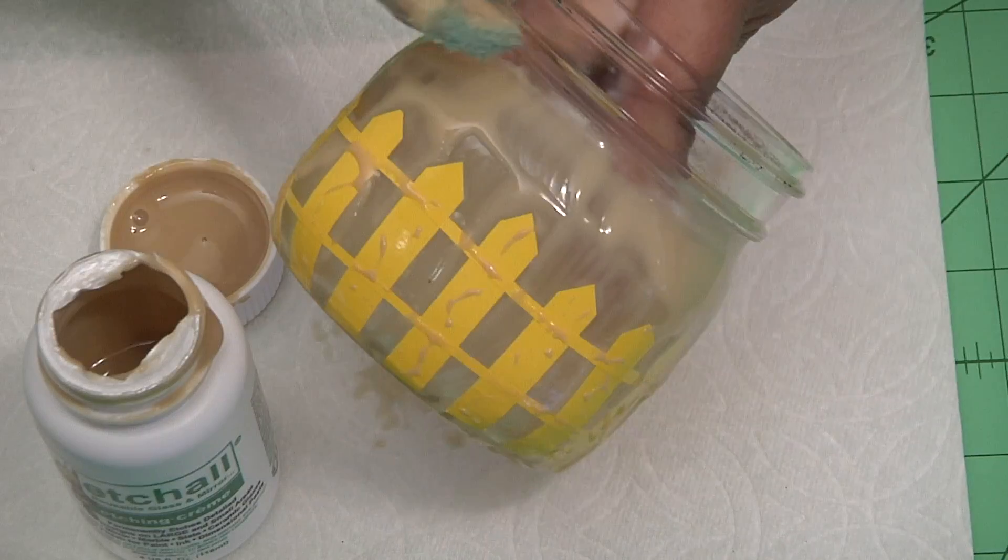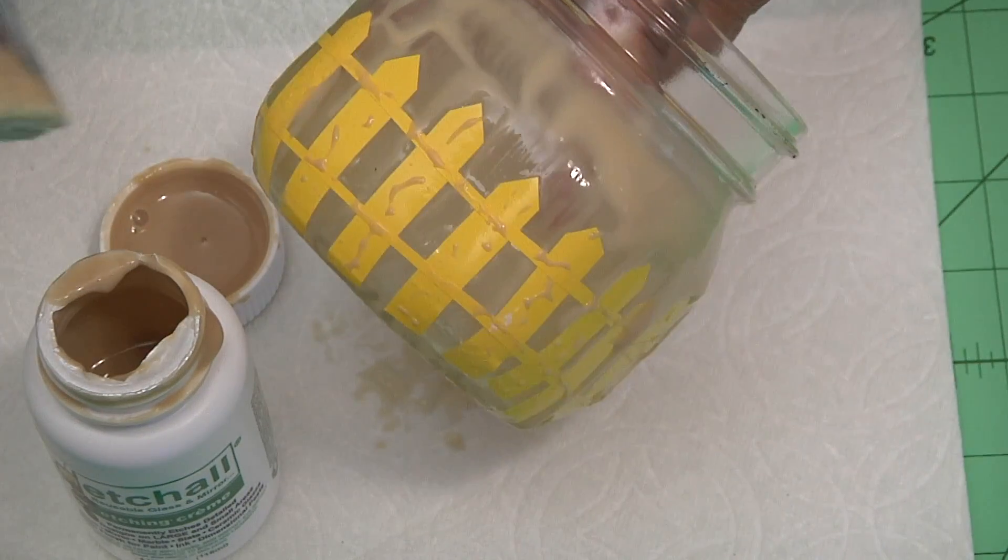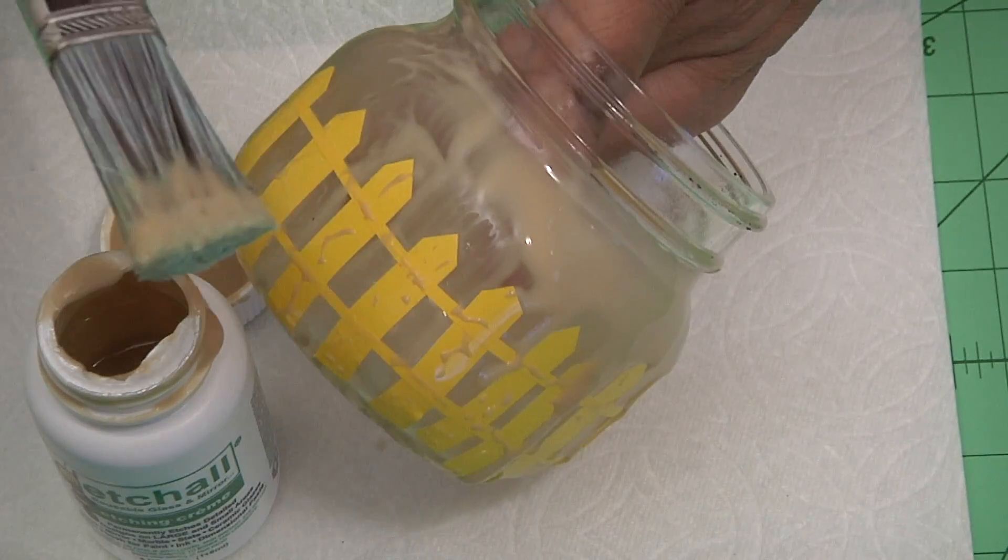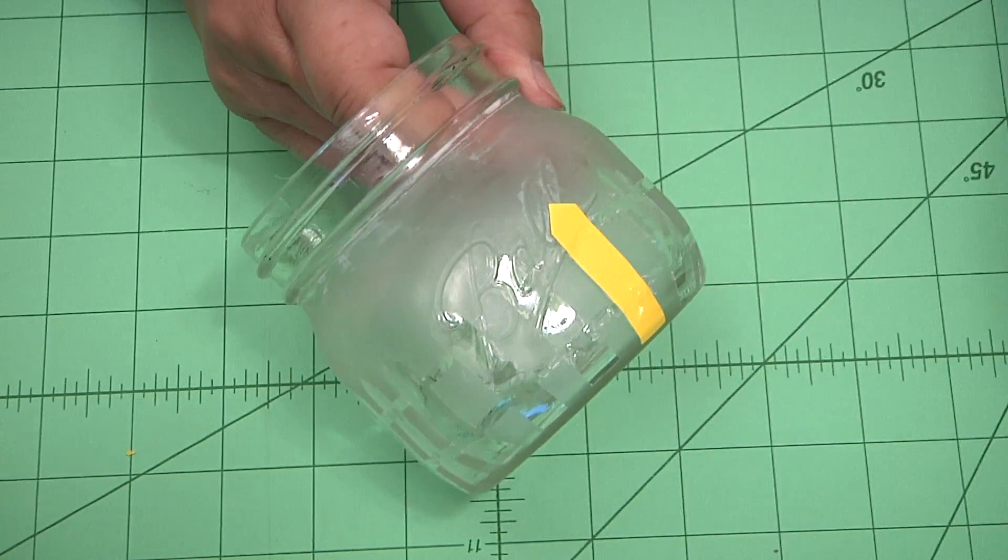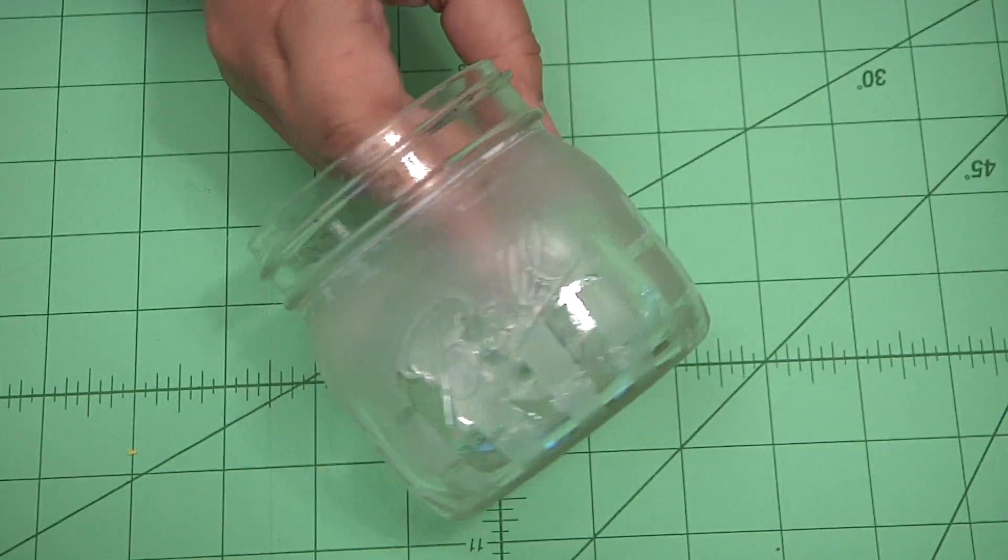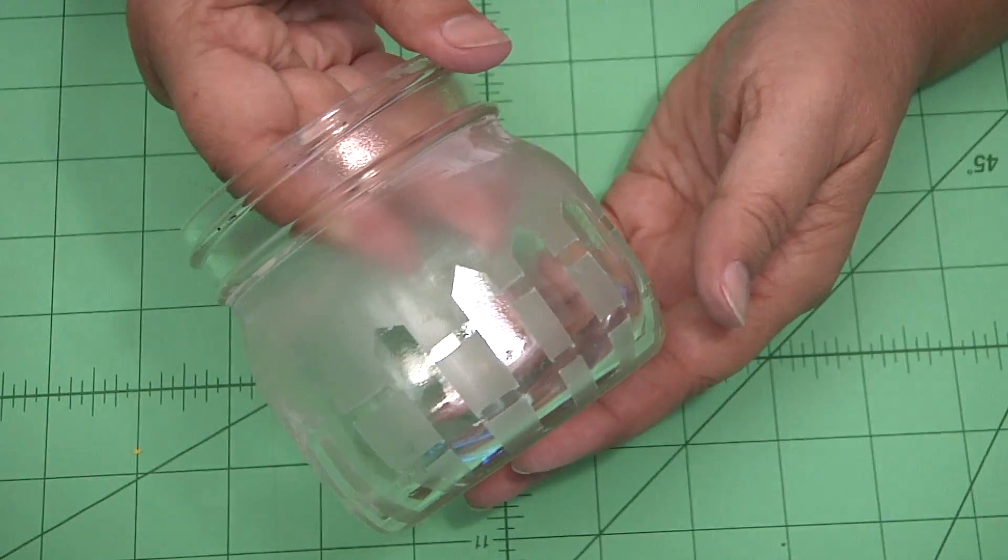There's the timer. Now go ahead and put as much of the etchall cream back into the jar and you can save it for your next project. Once you've done that, go ahead and just rinse it under some cold water. Now that it's all rinsed off and clean, go ahead and start peeling back the fence posts. You might want to take the strips off first, but go ahead and do that.